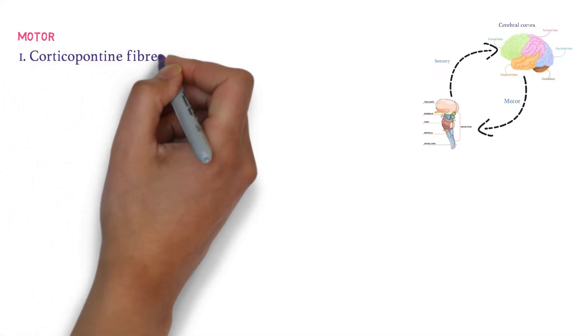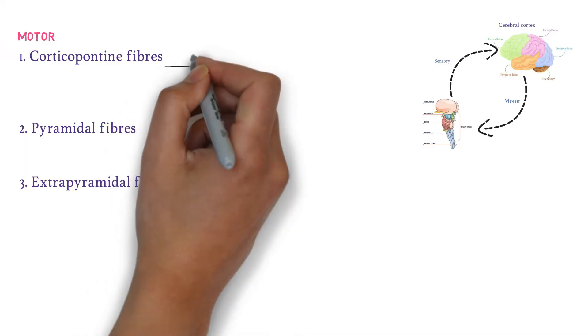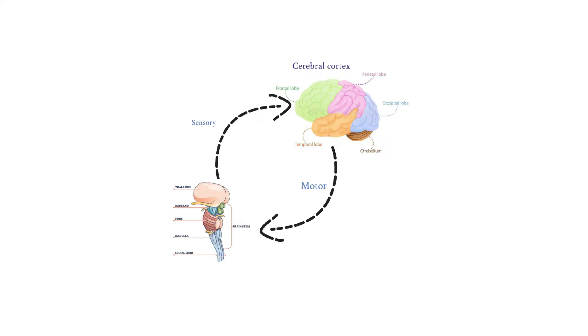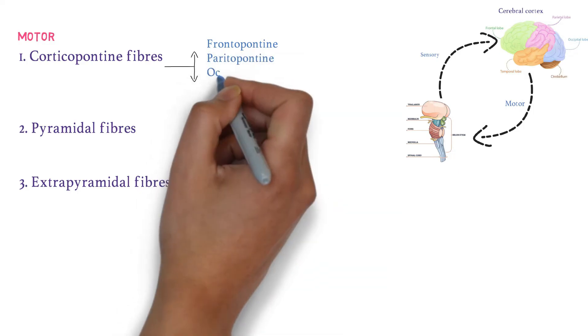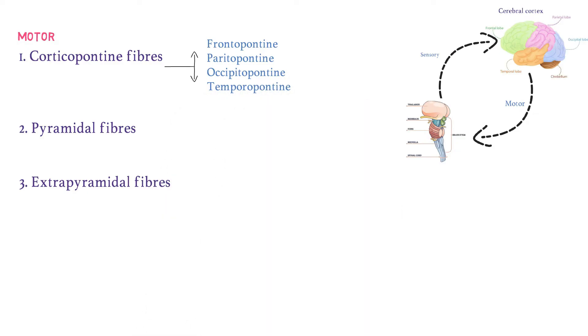Motor neurons run from the cerebral cortex to the brainstem and spinal cord. There are three types: corticopontine fibers, pyramidal fibers, and extrapyramidal fibers. Corticopontine fibers go from cortex to pons, and since the cerebral cortex has four lobes, we have frontopontine, parietopontine, occipitopontine, and temporopontine fibers — one from each lobe.